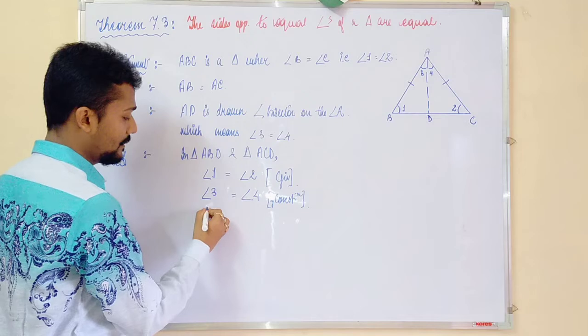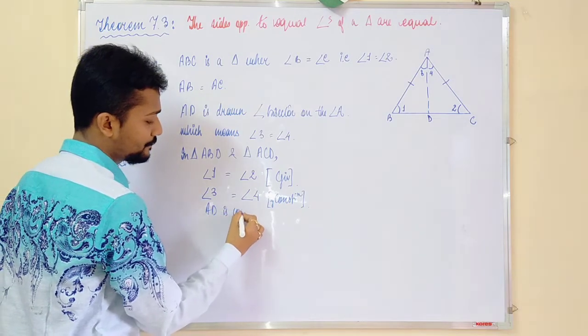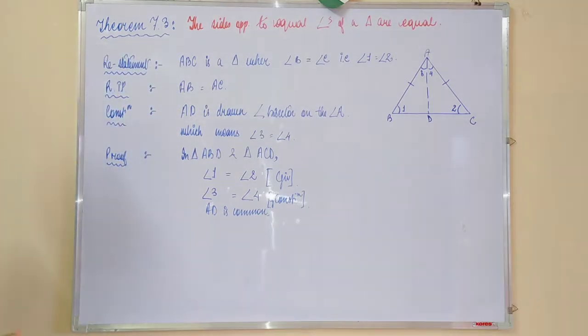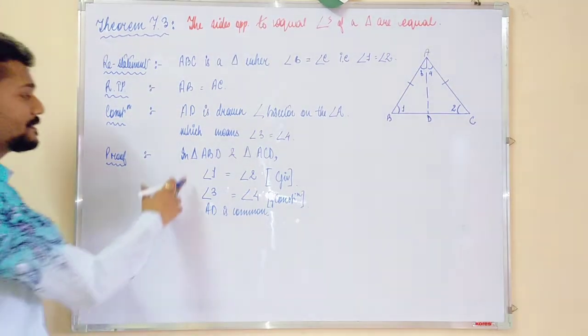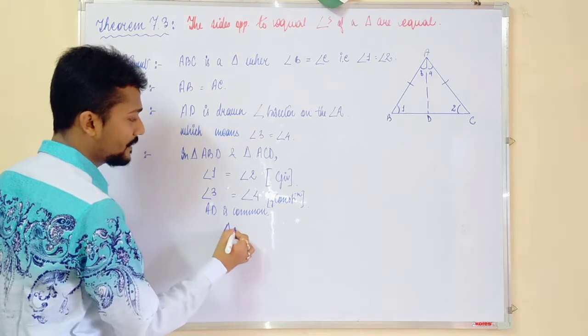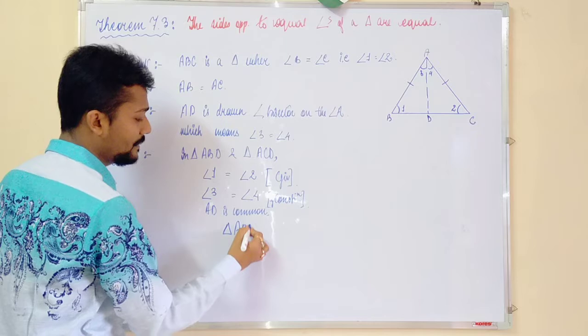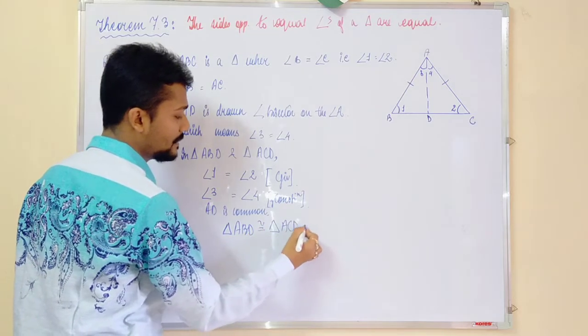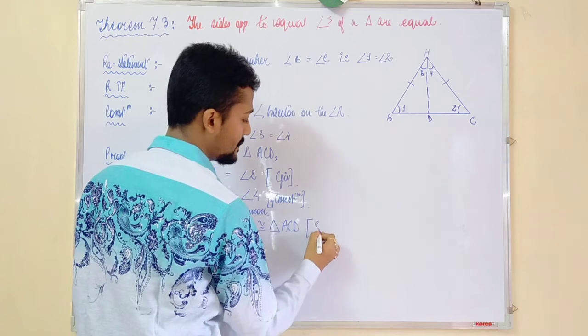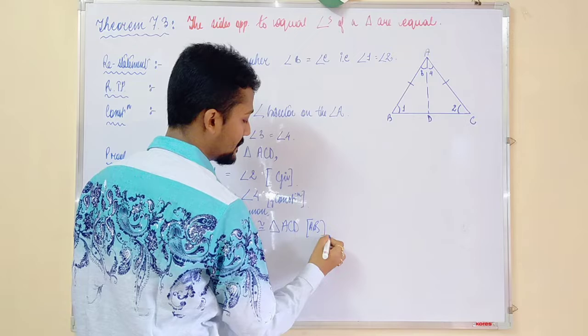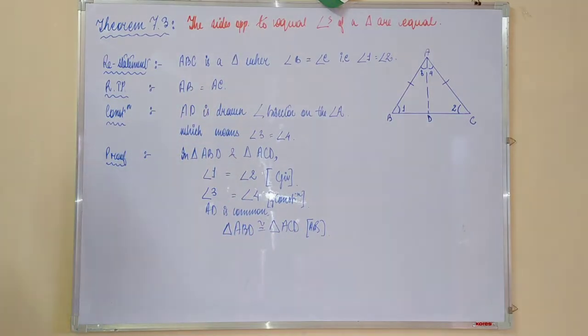By construction. Then, AD is common. Now, by this angle angle side, both your triangles are congruent. That means triangle ABD is congruent to triangle ACD by angle angle side.